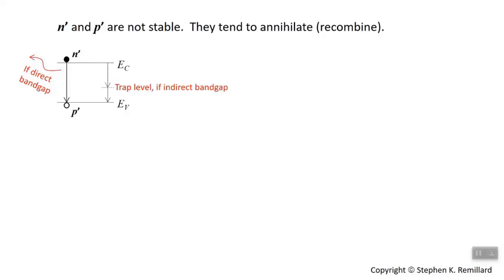There are two mechanisms by which recombination might occur, and they're illustrated in this little band diagram. For a direct band gap semiconductor, it's not uncommon just to have the electron find a hole in the valence band and go home, at which case energy is emitted. It could be a photon. It could be thermalization of a phonon, which it more likely is unless you actually have an optoelectronic device.